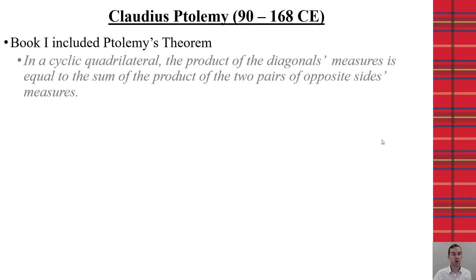Now, in his first book, we get a concept that we actually teach in geometry today, which is that in a cyclic quadrilateral, the product of the diagonals' measures is equal to the sum of the products of the two pairs of opposite sides' measures. So, what does that mean?